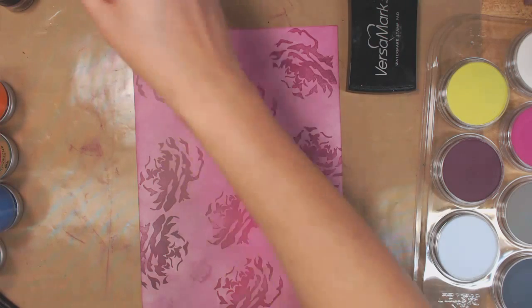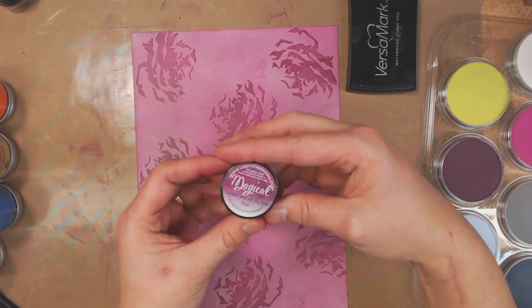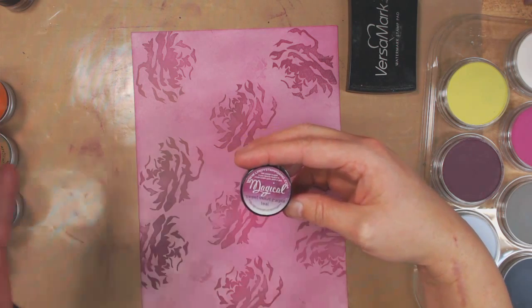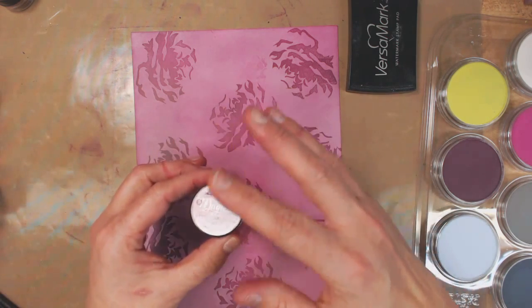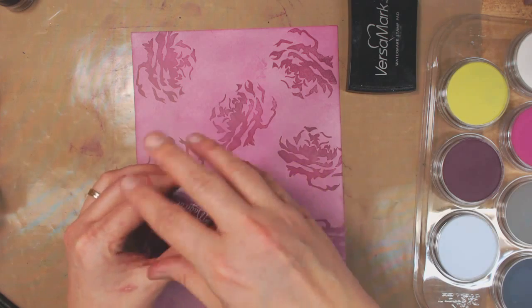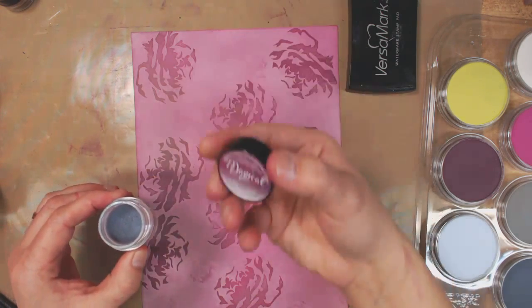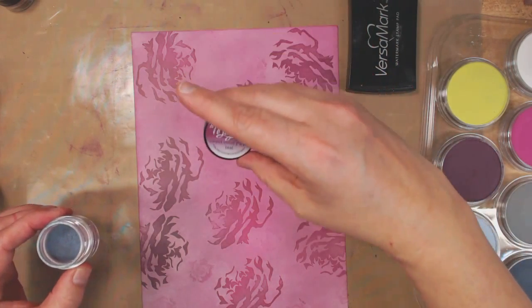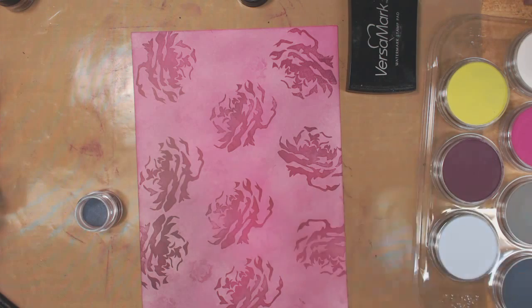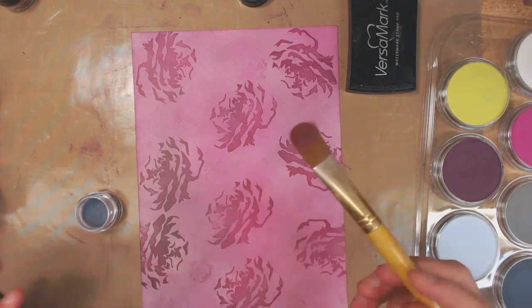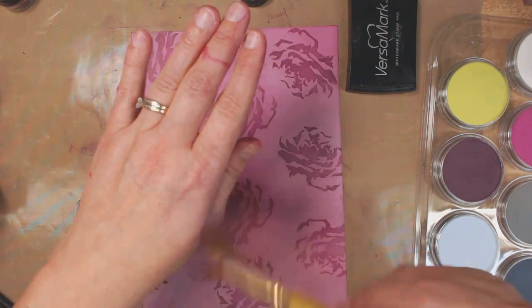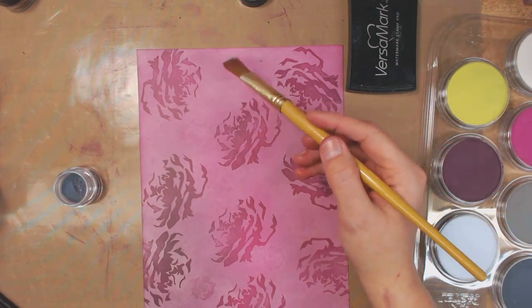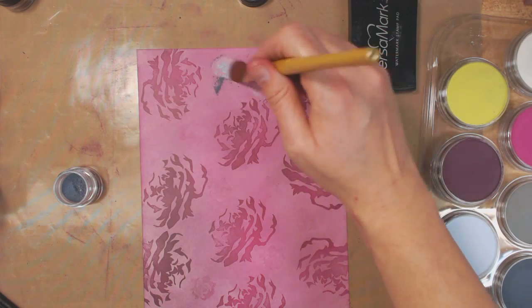Lindy's Stamp Gang Magicals. This is one of my favorite products that I carry in the store and that I've ever used in my whole life to be honest with you, just because of how magical it is. It's appropriately named magicals. This one is called sweet violet purple teal. I've got a dry filbert brush, doesn't really matter what shape it is, but a rounded edge is nice.